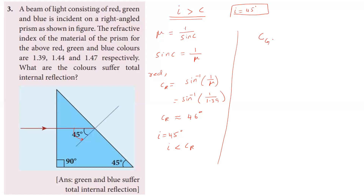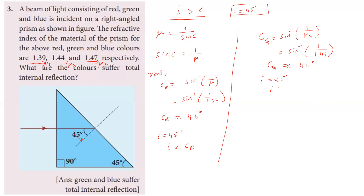The critical angle for green light equals sin inverse of 1 by mu of green light. The refractive index of green light is 1.44, giving a critical angle of approximately 44 degrees. Since the angle of incidence is greater than the critical angle for green light, green light undergoes total internal reflection.